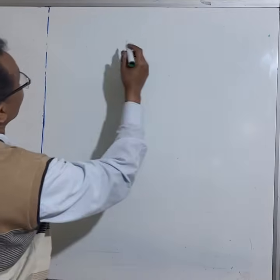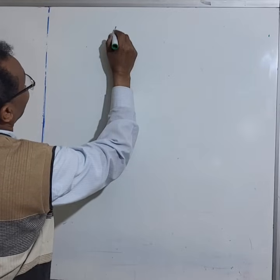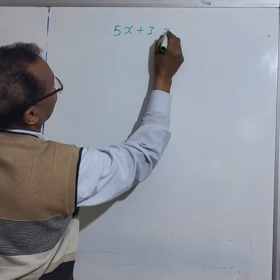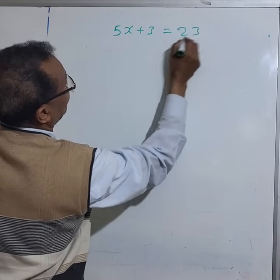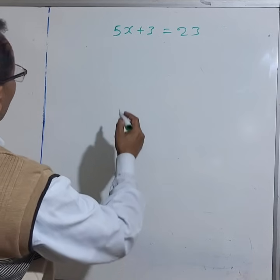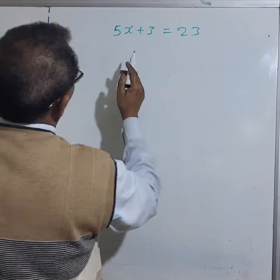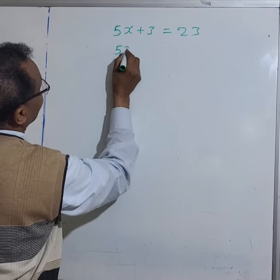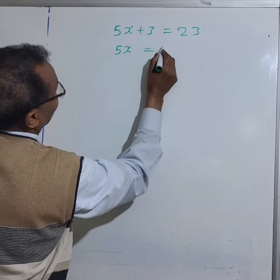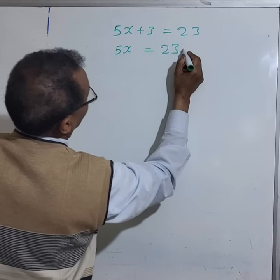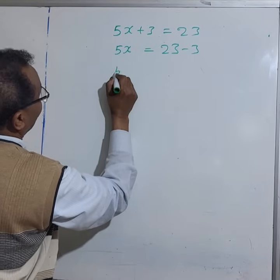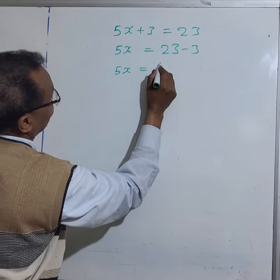Let's do 5x plus 3 equals 23. This linear equation consists of one variable which is x. So 5x equals 23 take away 3, so 5x equals 20.